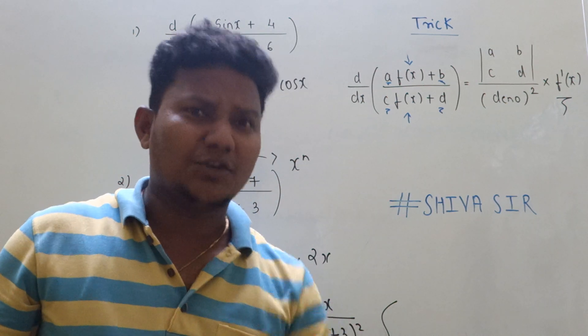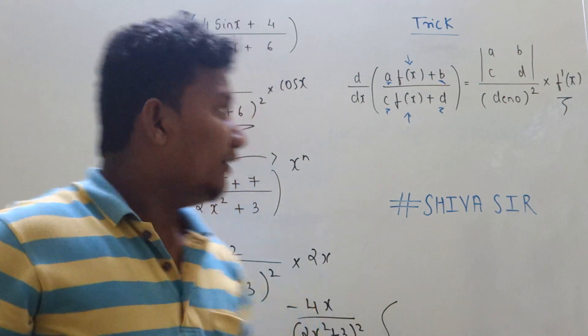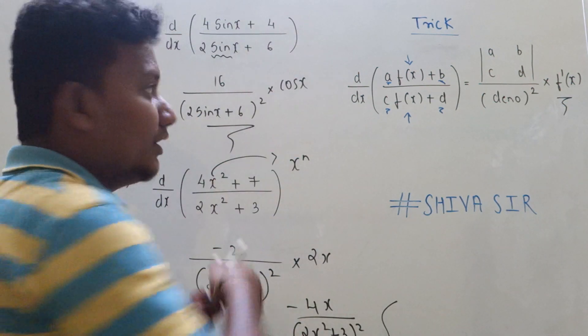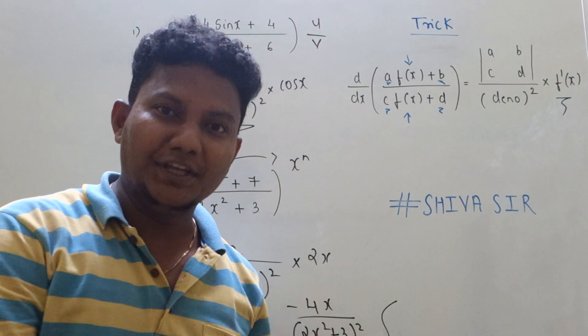Yes, yes, there is a second method also, and you all might be knowing what is that second method. We can apply u/v: derivative of u/v is (v × derivative of u - u × derivative of v) / v².